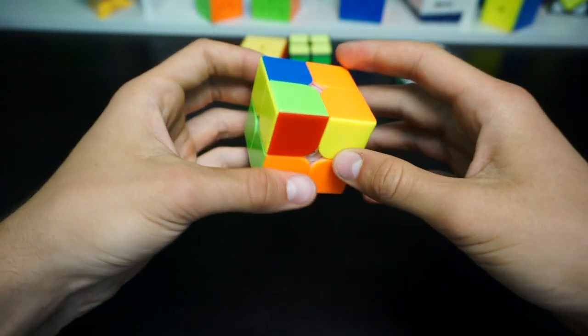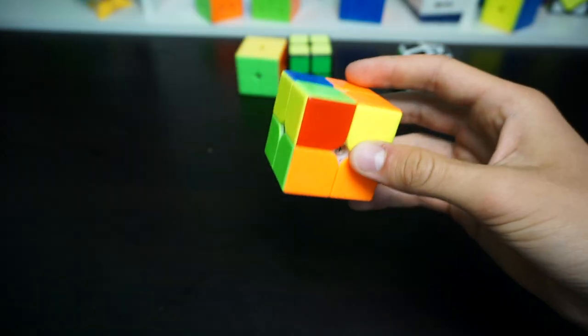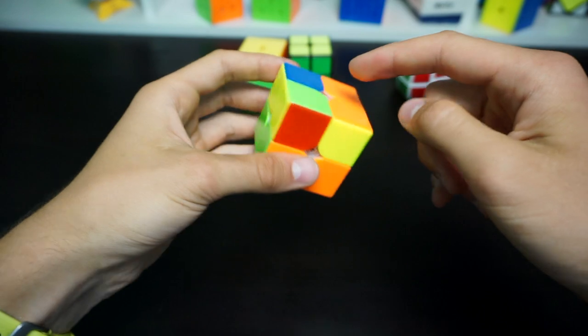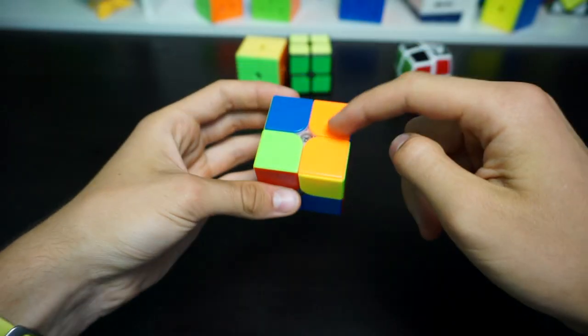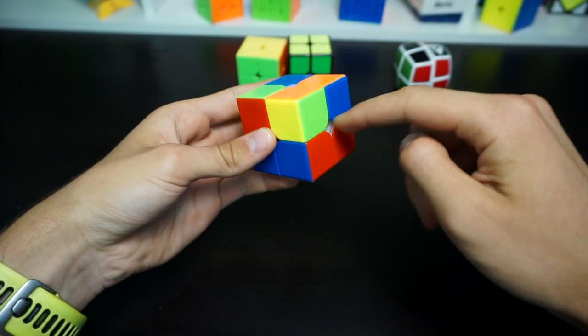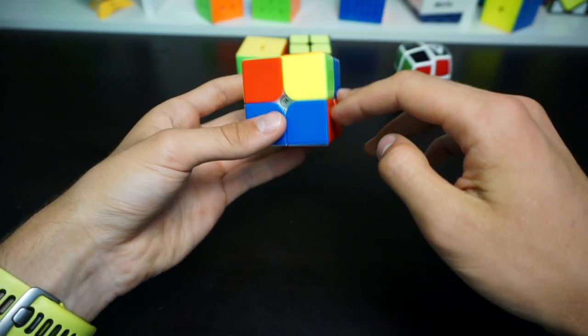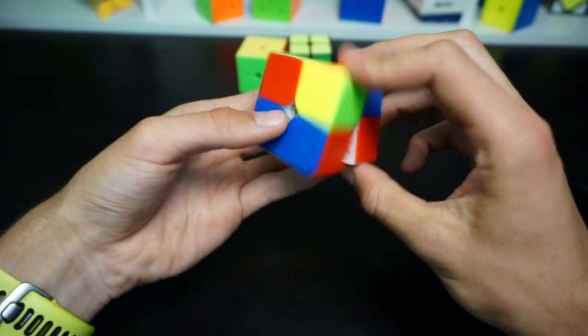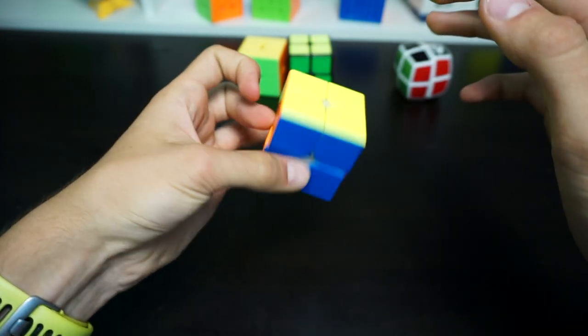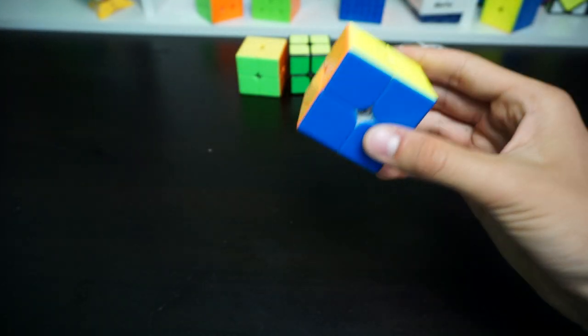Another quick tip is knowing your AUF afterwards. So if I see this case, I know that this block needs to be above its color. So basically if it's above red, I will need to do a U2 afterwards. And it helps to bring down the times tremendously.